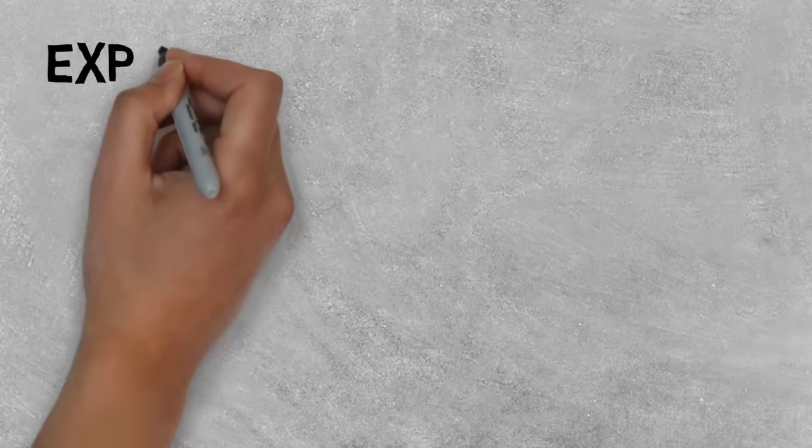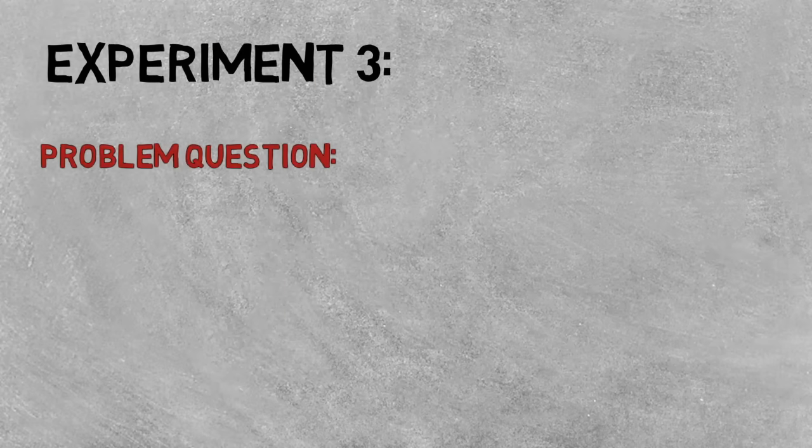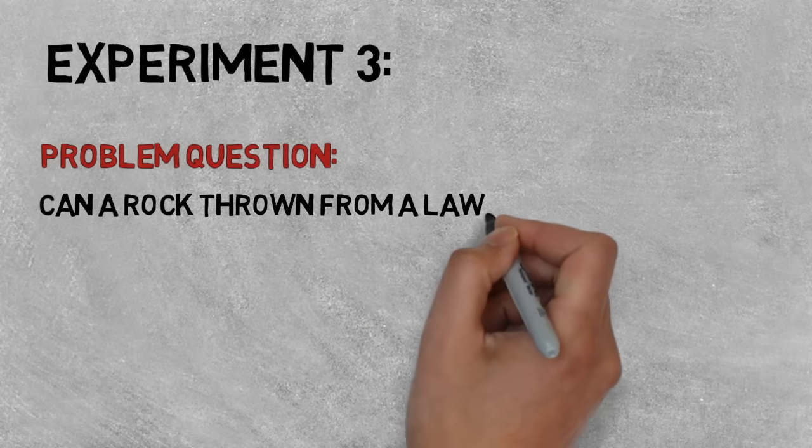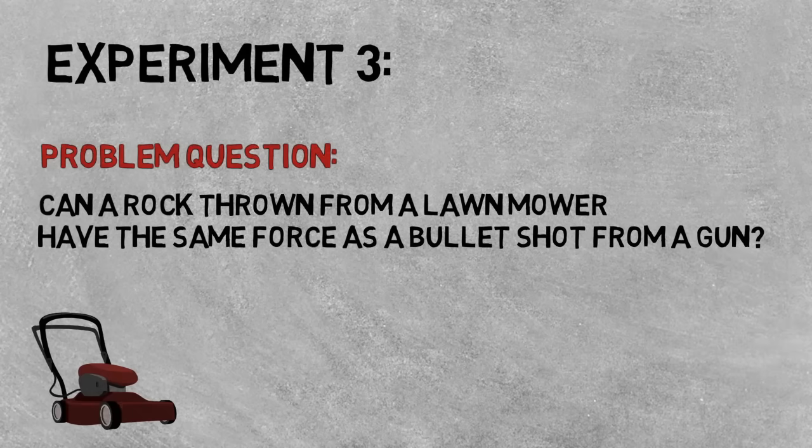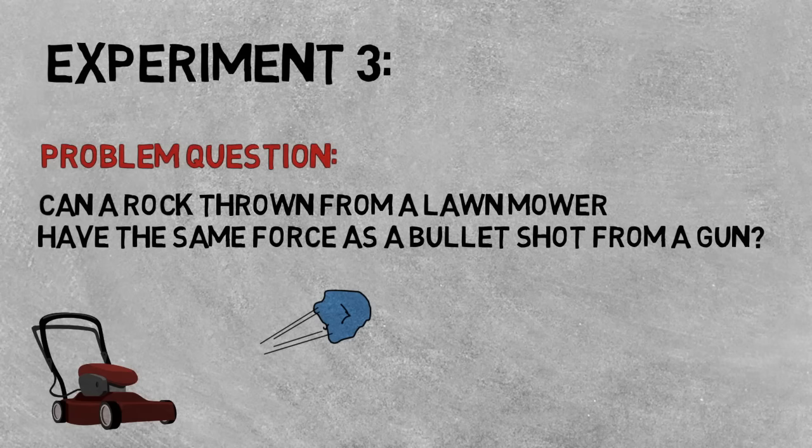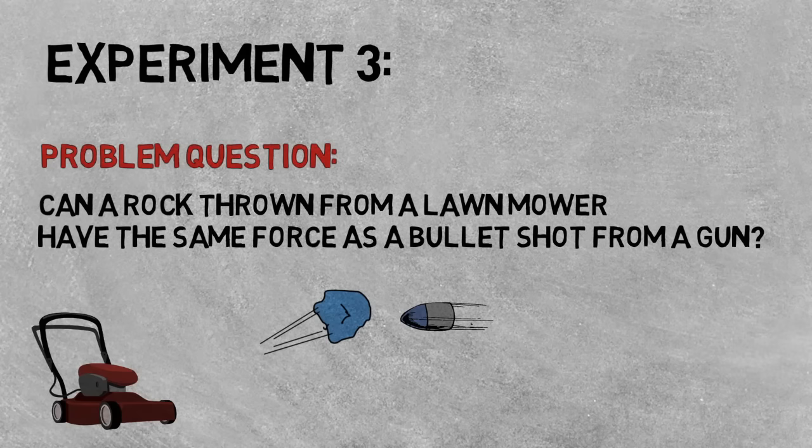Let's go to experiment 3. Can a rock thrown from a lawnmower have the same force as a bullet shot from a gun? Anyone that's mowed a lawn is aware that a rock and other material can be shot with a lot of energy from a running lawn mower. It has been said that rocks shot from a lawn mower can have a force equal to a bullet shot from a gun.